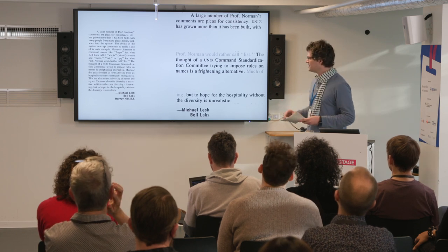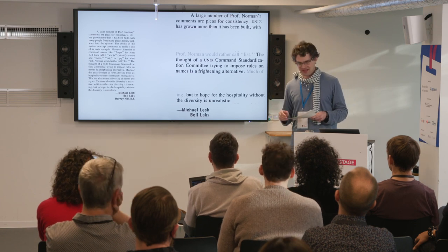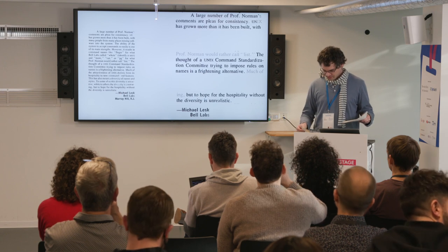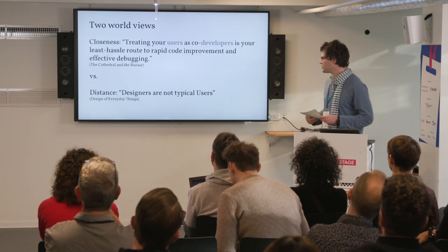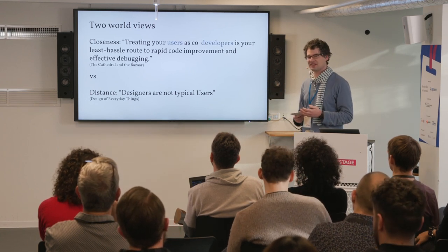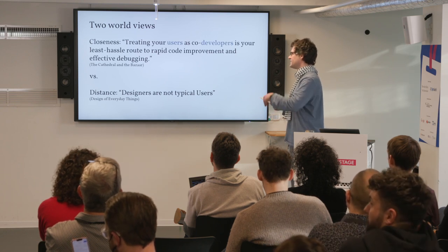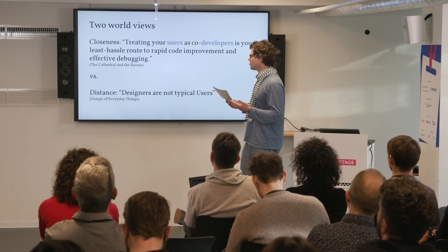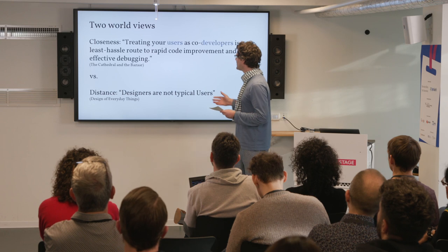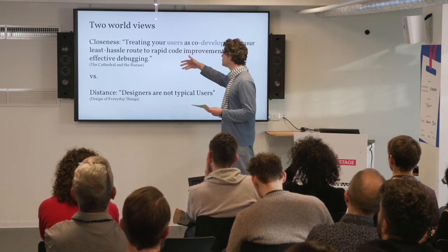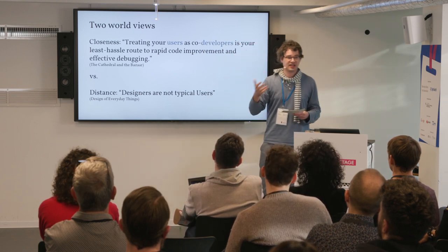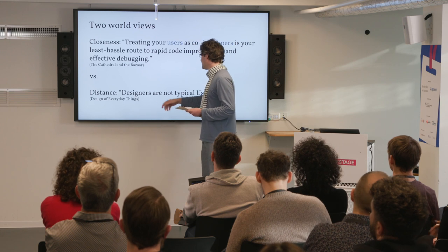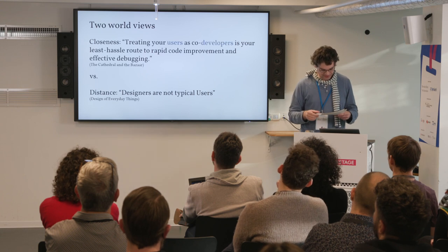The last part of that puzzle can't be found in that document, but I want to show two other documents briefly — who is the user, because that is on both open source developers' and UX designers' minds. I pick out famous documents not because they are the best analysis, but because they have had a lot of cultural influence. In 'The Cathedral and the Bazaar,' which is said to have co-started open source, there is the quote: 'Treating your users as co-developers is your least hassle route to rapid code improvements and effective debugging' — users are very close and they are also programmers. And from Don Norman's book 'The Design of Everyday Things': 'Designers and also programmers are not typical users' — so you have distance here.